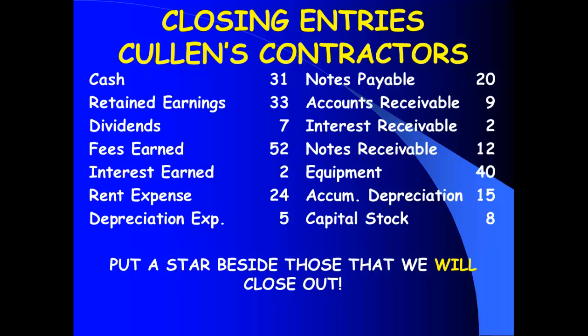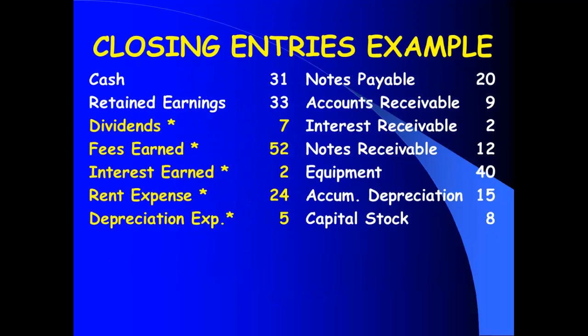Let's identify which accounts we're going to close out. Cash? No — it's an asset. Retained earnings? No — we'll use it but not close it. Dividends? Yes, that'll be my last entry. Fees earned and interest earned? Yes — they are revenues, closed in the first entry. Rent expense and depreciation expense? Yes — they're expenses, closed in the second entry. Notes payable? No — it's a liability. Accounts receivable, interest receivable, notes receivable? No — assets. Equipment? No — asset. Accumulated depreciation? No — it's a contra asset that goes along with assets. Capital stock? No. So what are we going to close out? Dividends, my two revenues, and my two expenses.